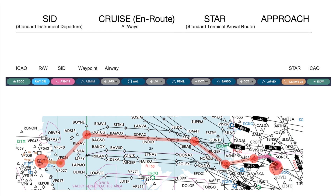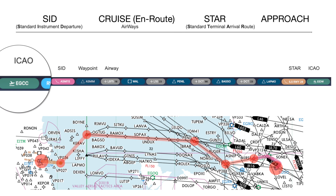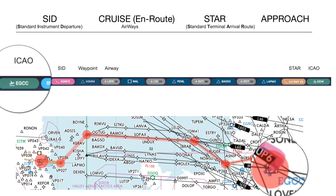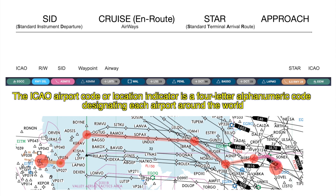So ICAO — we're taking off from EGCC, Echo Golf Charlie Charlie. That is the ICAO identifier for Manchester. Every country has its own ICAO identifier. In England it starts with EG, in Ireland it's EI, America it's K, and so on and so forth. We're going to depart runway 05 Left — L is for left, R is for right.